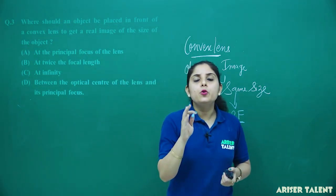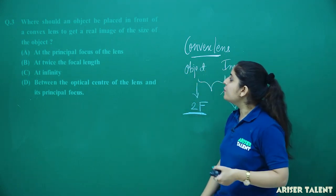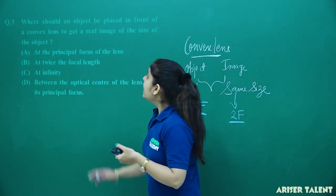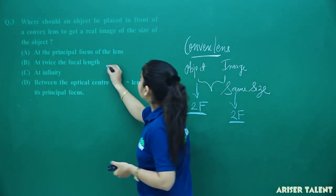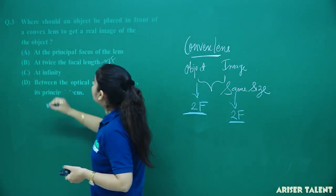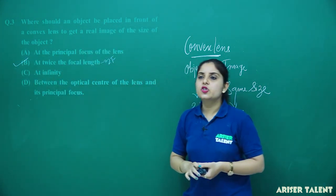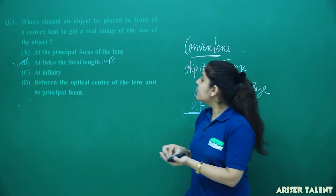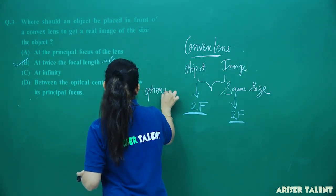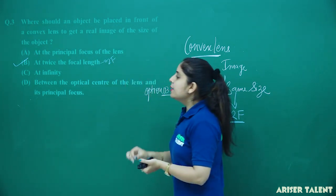So what is 2F? 2F is twice the focal length. The options include: at the principal focus of the lens, or at twice the focal length — this is our 2F. When you place the object at 2F, you will get the image of the same size as the object. So option number B will be our correct option.